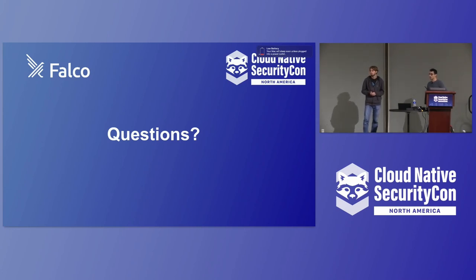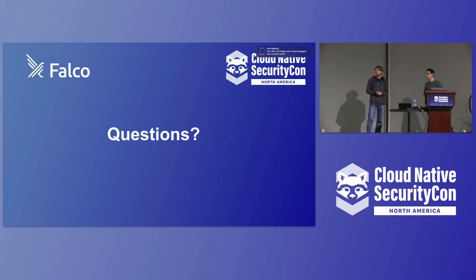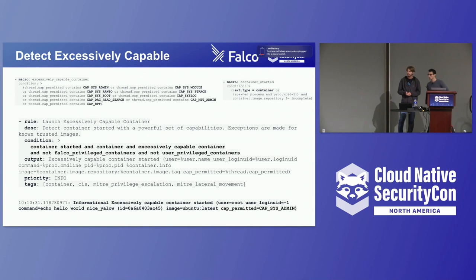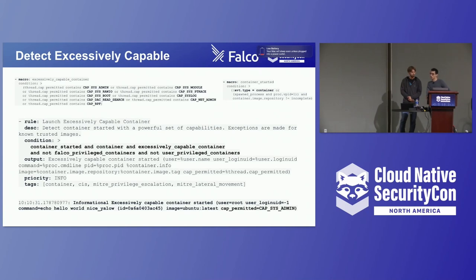Audience question: In the rule, I see you are ignoring Falco because it is running as privileged — 'and not Falco privileged container.' Why is that? Answer: Other macros are used to reduce false positives. Macros are used to simplify overall conditions and make them more readable, and sometimes to exclude known cases that would trigger false positives. That's one of those cases.